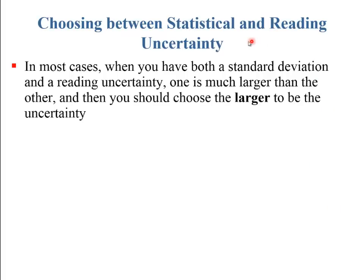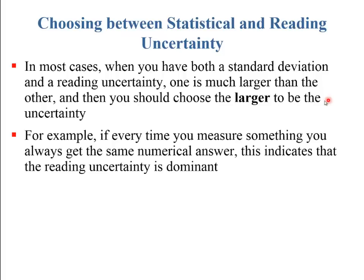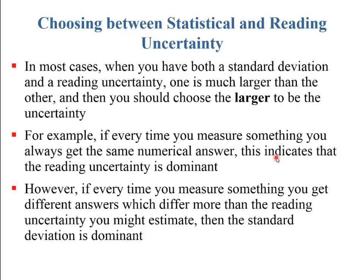So we now have two uncertainties: statistical (the standard deviation) and the reading uncertainty. You always choose the larger one as your actual uncertainty. If every time you measure something with a digital thermometer you get the same answer, your statistical uncertainty is very small, so just use the reading uncertainty. However, if your measurements vary more than the reading uncertainty, forget the reading uncertainty and use the standard deviation.